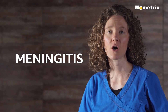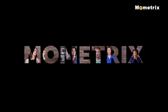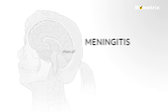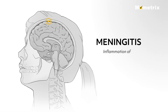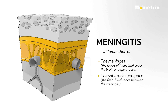Welcome to this video tutorial looking at an overview of meningitis. Meningitis is an inflammation of the meninges, the layers of tissue that cover the brain and spinal cord, and of the subarachnoid space, the fluid-filled space between the meninges.